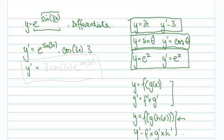The derivative is, let's just simply neaten that up, 3 cos 3x e to the power of sine 3x.